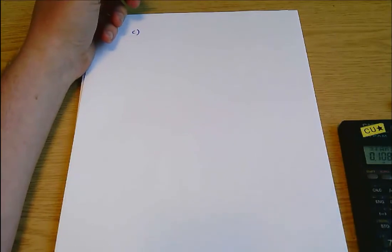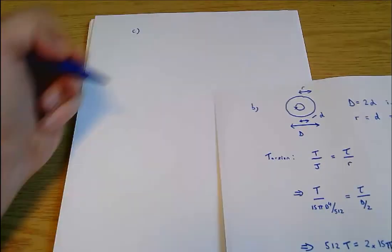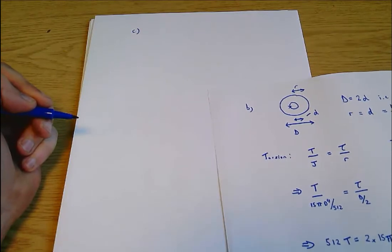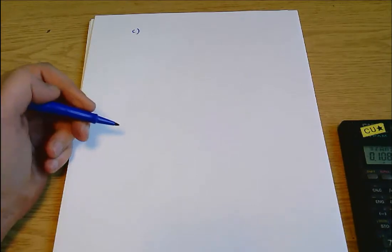But our part C here says calculate the minimum shear stress in the shaft in part B while the shaft is in operation. Well the minimum shear stress is going to occur at this point here on the inside of the shaft, right? Because the shear stress goes up as you move further and further away from the central axis, and that's the point on the shaft closest to the central axis.